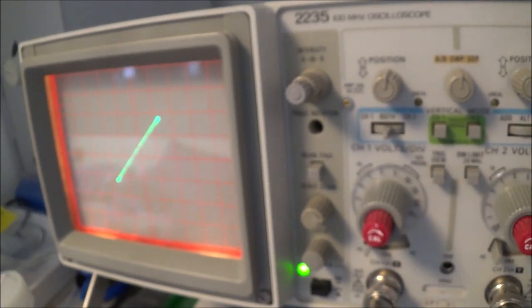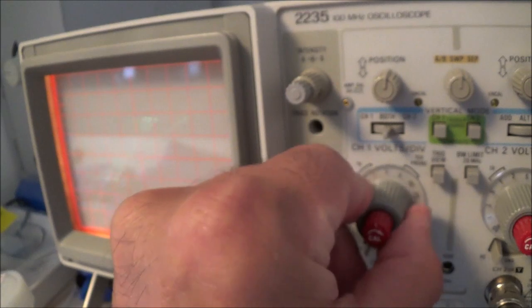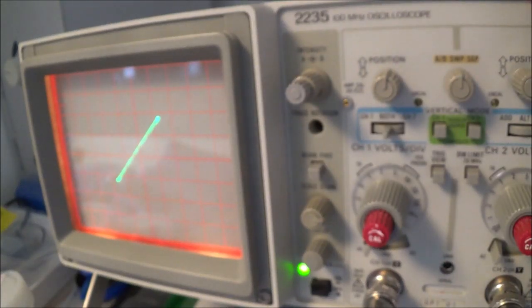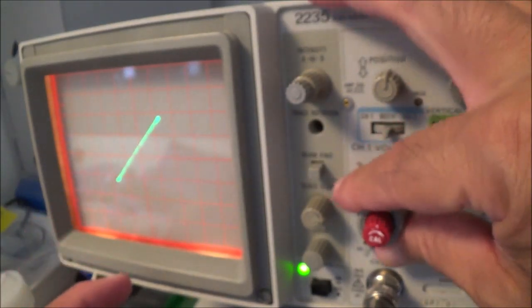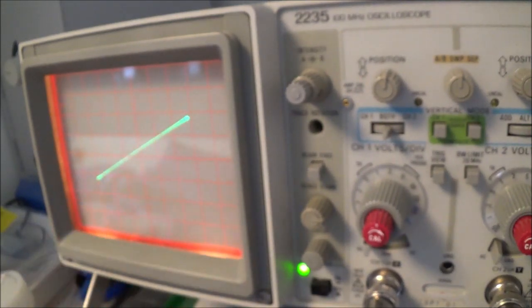Of course, for this, we have to put the scope into XY mode, which I already have, and then adjust the controls here, the vertical controls, in order to get a usable figure on the display. And you can see I've got it set up here as to where I got it at about a 45 degree angle.